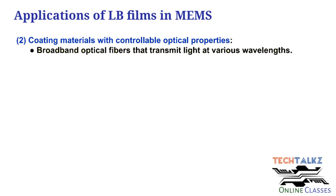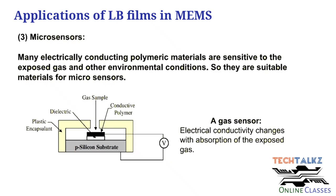The thickness can be changed very accurately, enabling precise control of optical properties. Another application is micro sensors — specifically, thin film gas sensors. The LB film is sensitive to gas: the presence of a gas changes the resistance and conductivity of the polymer film. By selecting the appropriate LB film material and method, sensitive and precise gas detection can be achieved.